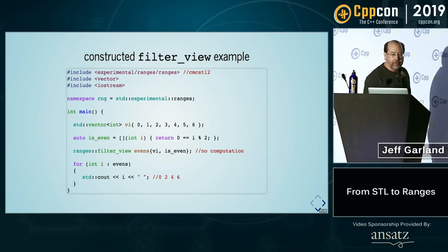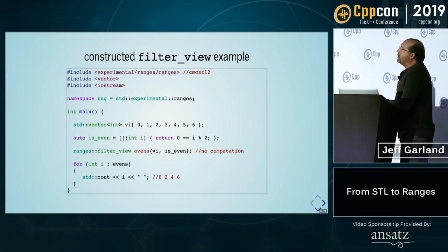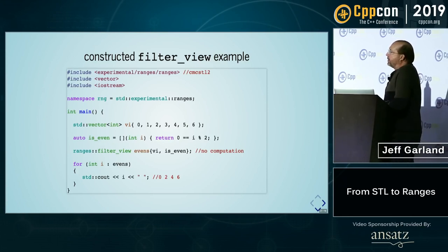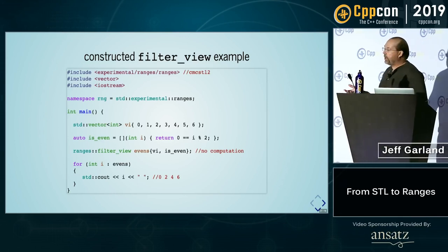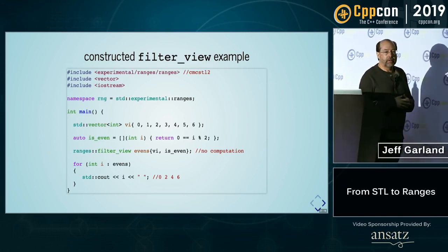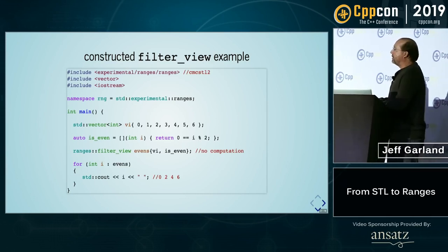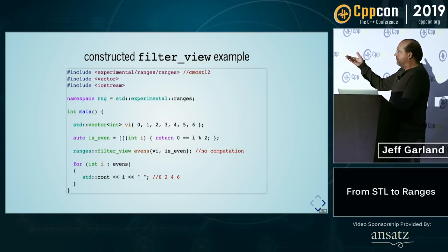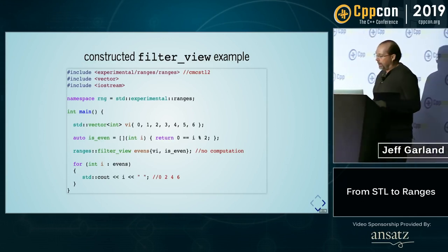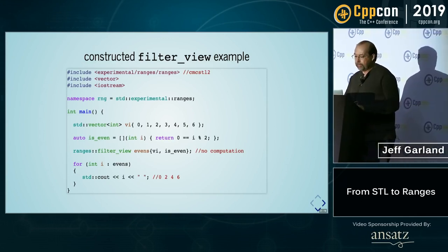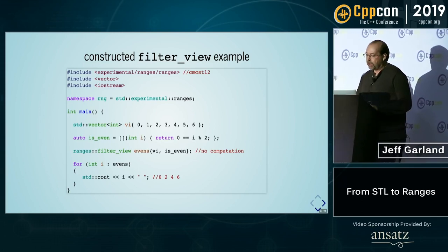Let's look at some more examples. This one comes from CMC-STL2. I have a standard vector, and a predicate that checks if the values are even. In this case, I construct the view called evens, passing in the vector to the constructor with the predicate. At the point of construction, no computation is occurring — it's only constructing the object itself. And I have to iterate over it with a for loop. I get the integers back out and print them. Pretty straightforward — extremely elegant piece of code.